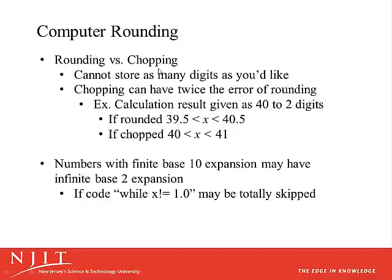Let's talk a little bit about computer rounding. We can't store an infinite number of digits on a computer, so our computer might round the values, or it might just chop them off after however many digits it's saving. Suppose we had a calculation that gives a result of 40 with two digits of accuracy. If the number was a rounded result, the number must be between 39.5 and 40.5. However, if we just chopped the number after two digits, the true value is between 40 and 41. So chopping can have twice the maximum error that rounding might have — rounding is better if you can do it.